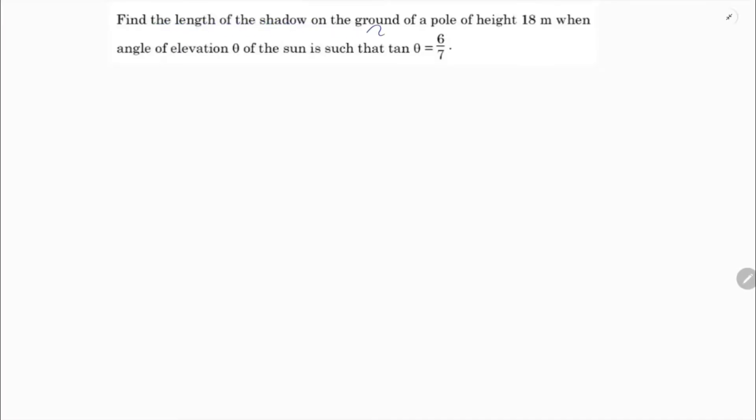Find the length of the shadow on the ground of a pole of height 18 meters when the angle of elevation theta of the sun is such that tan theta equals 6 by 7. So here, find the length of the shadow on the ground of a pole of height 18 meters.